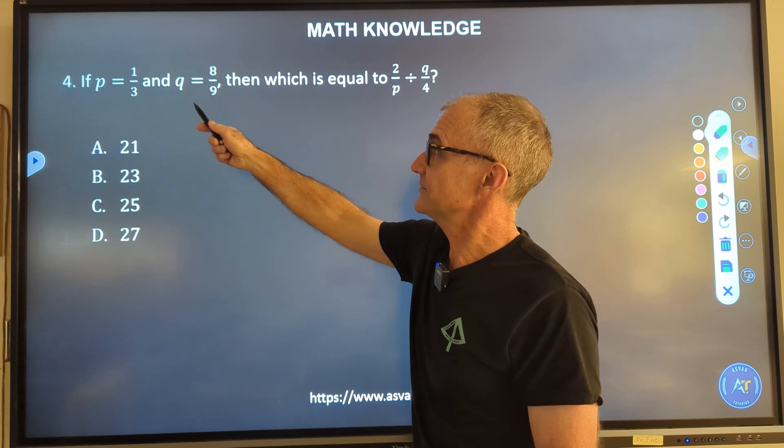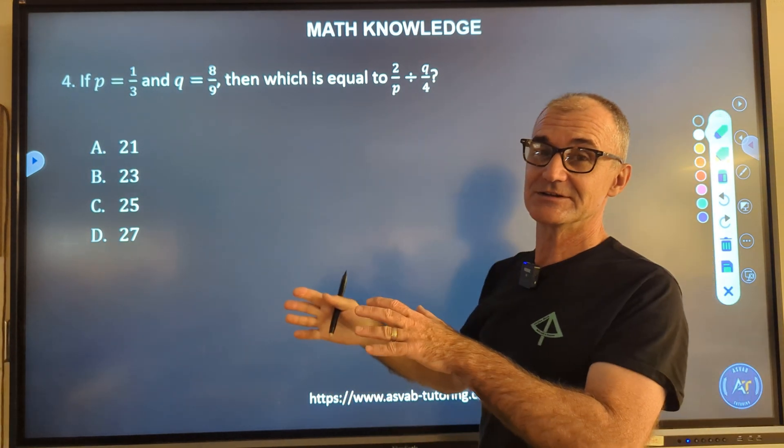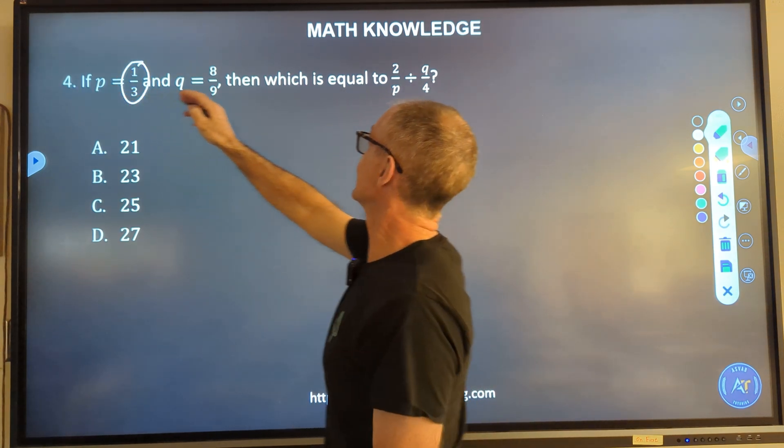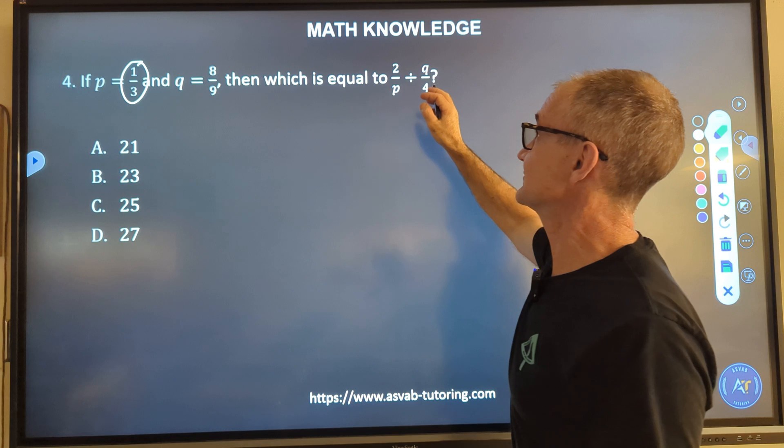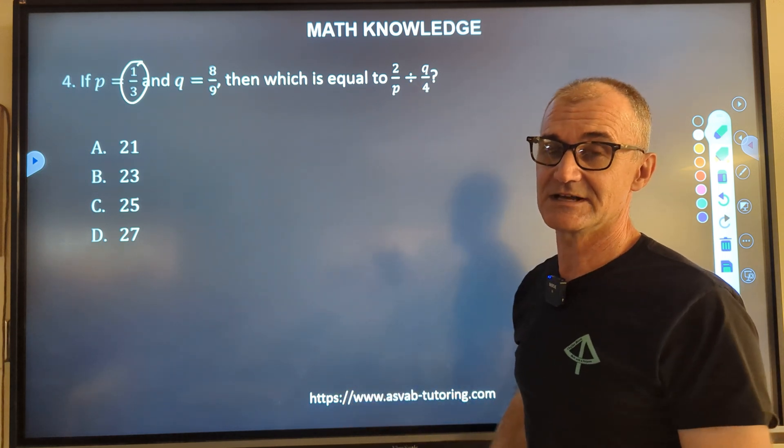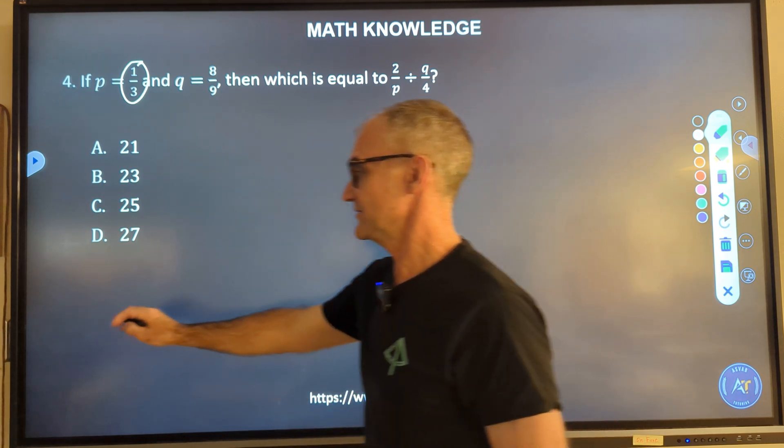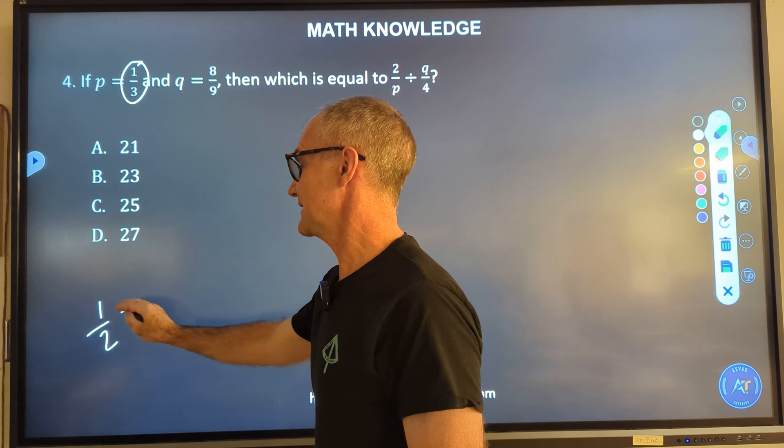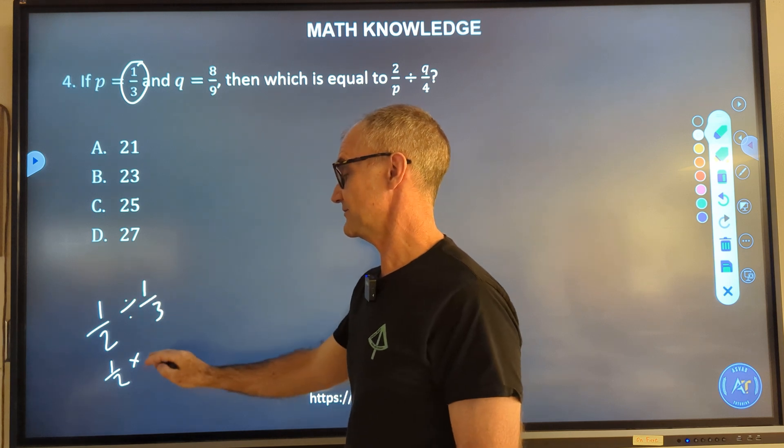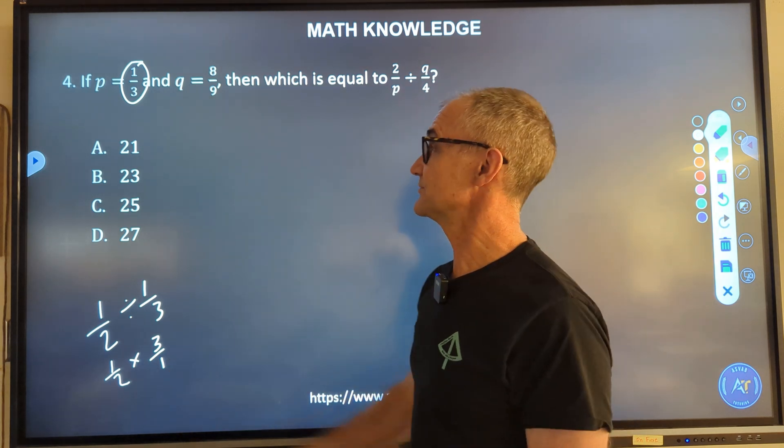Number four, if P is equal to a third and Q is equal to eight ninths, which is equal to this divided by this. We've got a few different problems here. First thing is we have substitutions. We've got to take this value and plug it in for P. This value, plug it in for Q. Then we have fractions inside fractions. And once we do all of that, then we have to do that division sign. So the rule for dividing fractions is multiplying by the reciprocal. If you have a half divided by a third, you turn that to multiplication and flip this over.